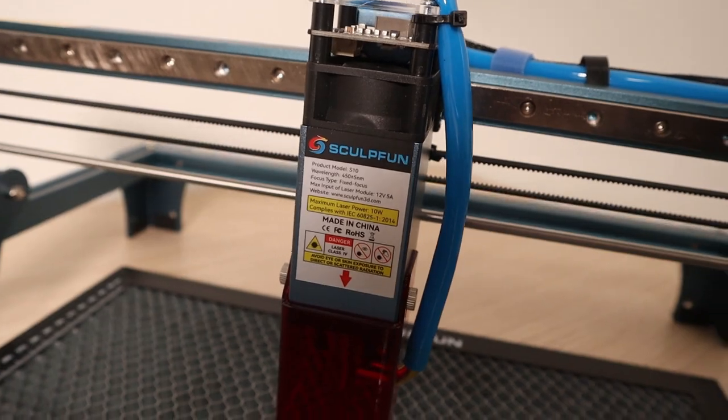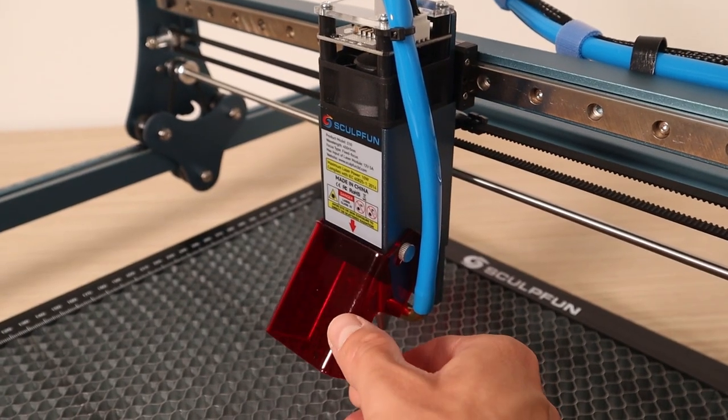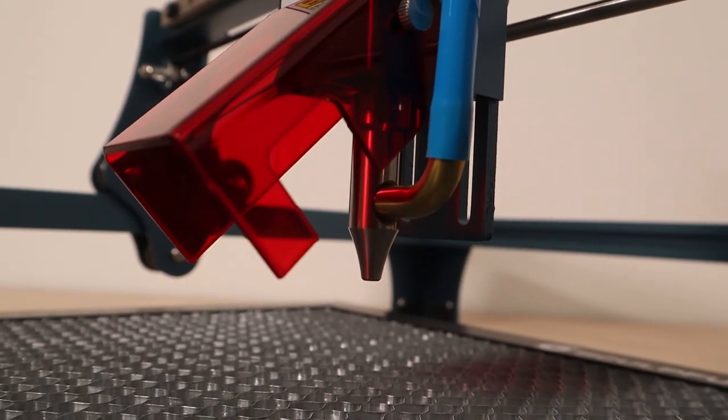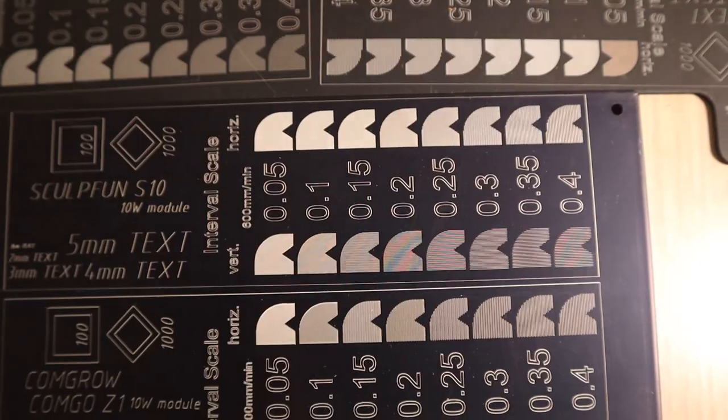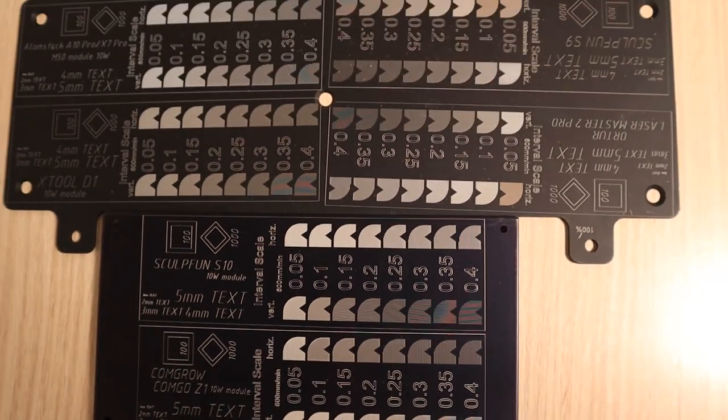The machine comes with a dual beam laser module that claims to have an optical output of 10 watts. I am also going to test how it engraves anodized aluminium, measure its laser spot size and compare all the results to other machines I have tested previously.